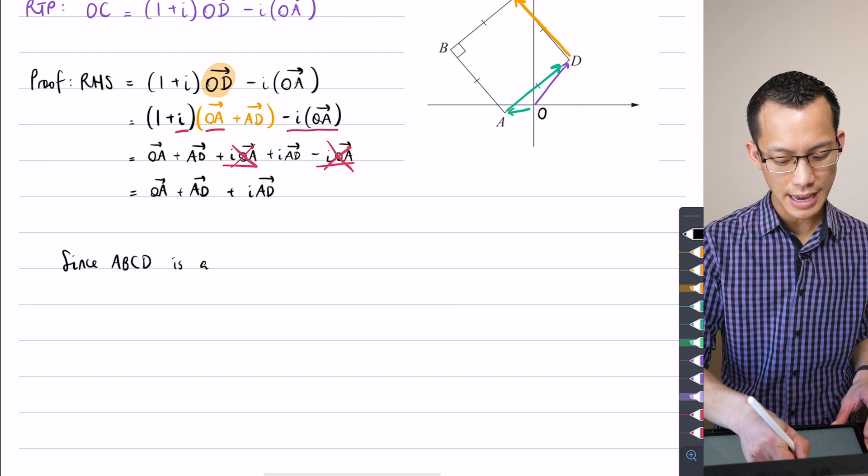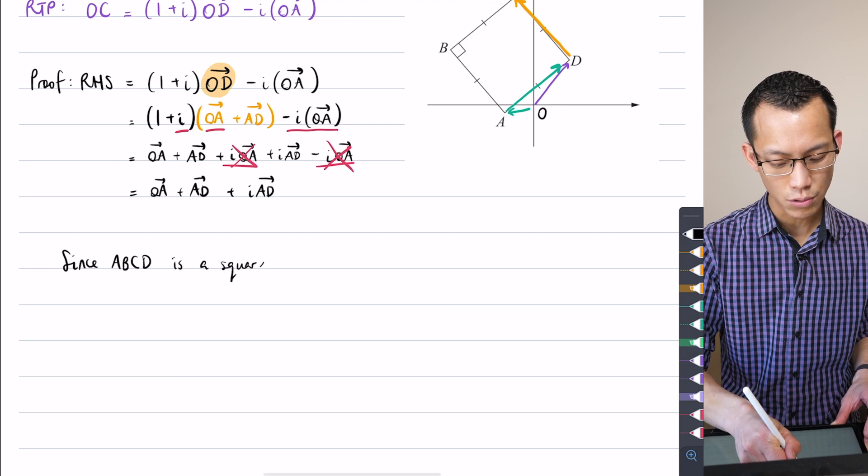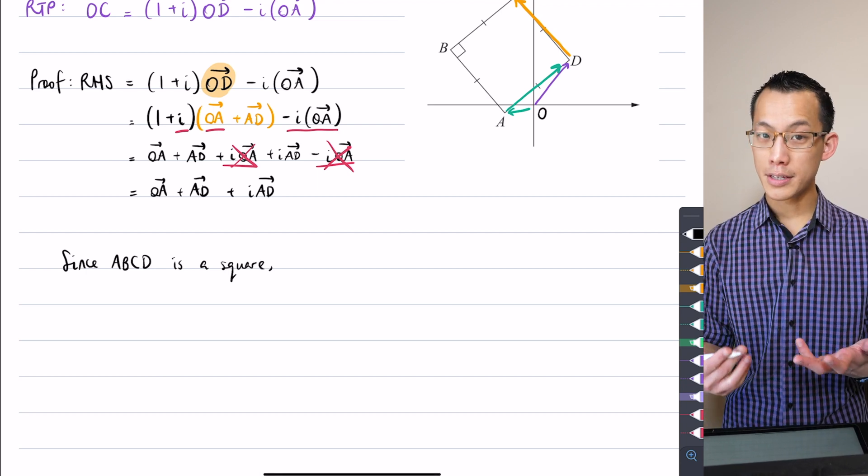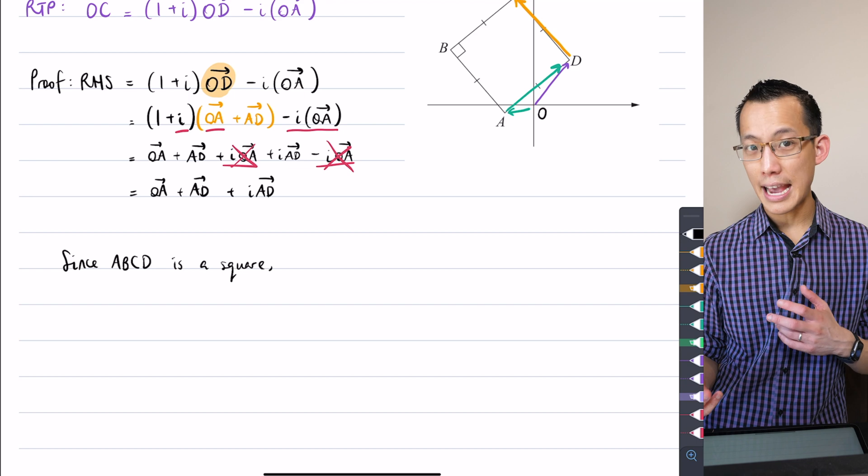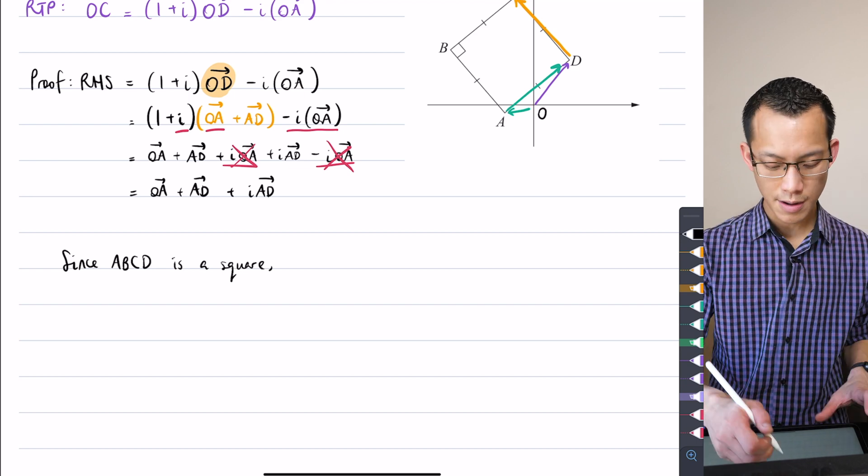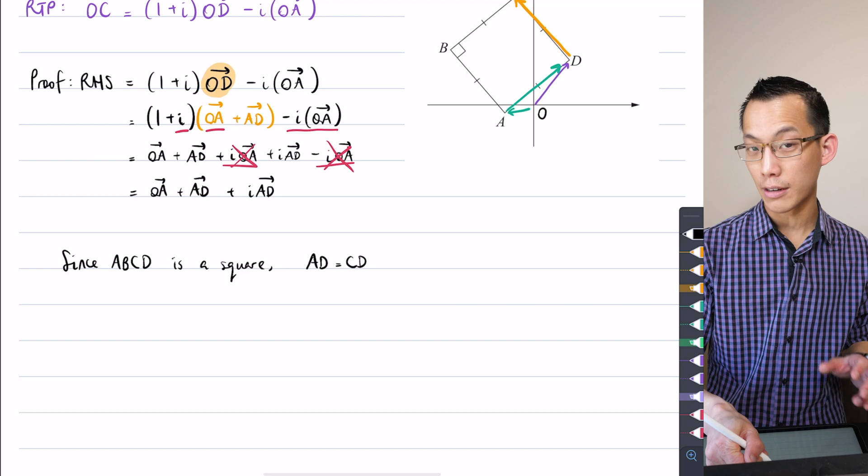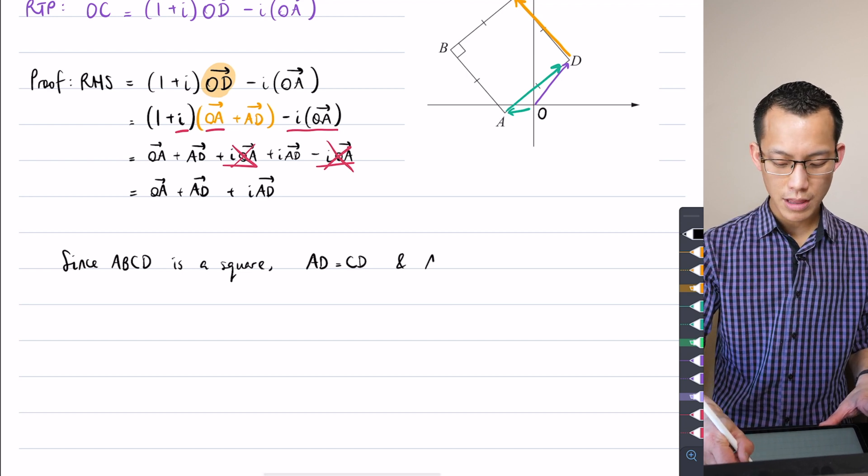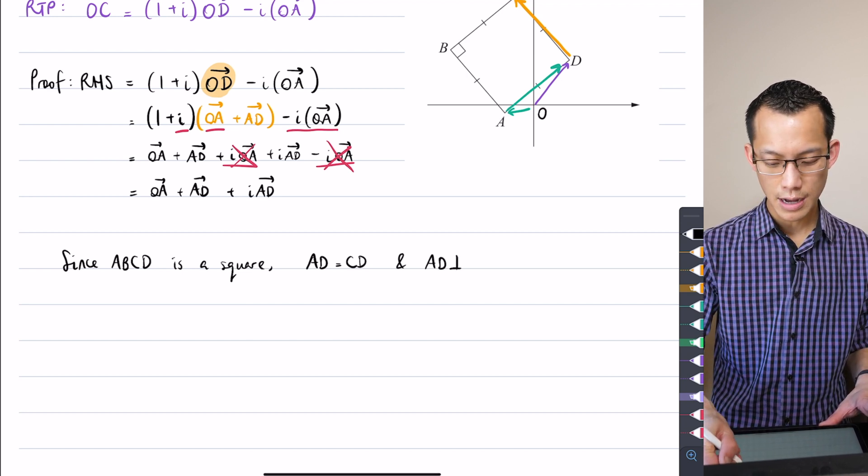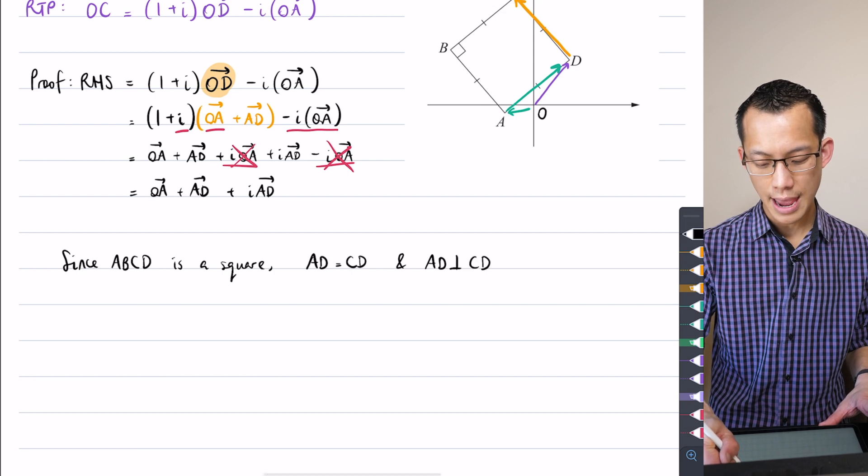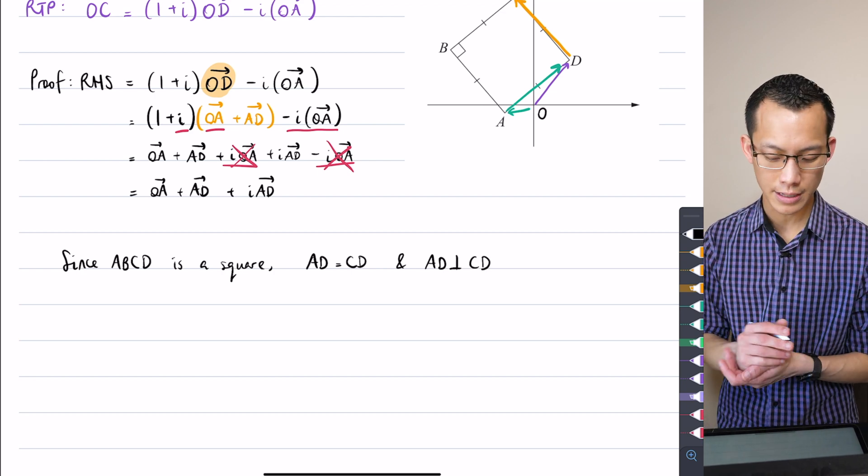Since I know that ABCD is a square, that tells me there's all kinds of relationships between the sides. In terms of AD and CD, I know two things. Number one, AD and CD are equal in magnitude, and I also know they're perpendicular because all adjacent sides in a square are at 90 degrees or at right angles.